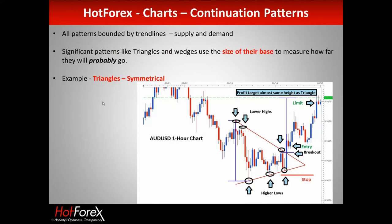All these patterns need supply and demand lines — very simple trend lines. We're going to look at triangles, wedges, pennants, and flags today. Typically, triangles and wedges use the size of the base to measure how far they will probably go. It's not an exact science, but it's about probability.